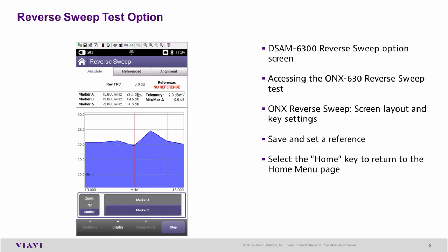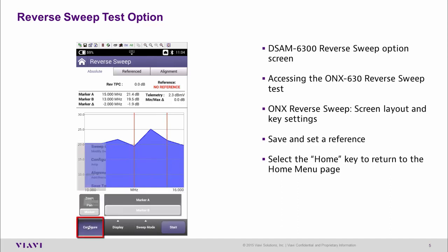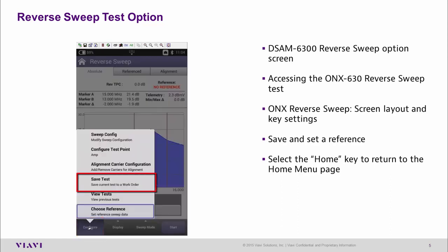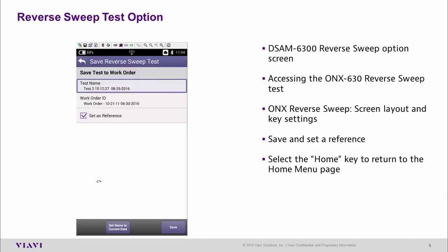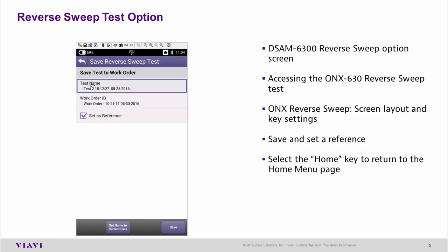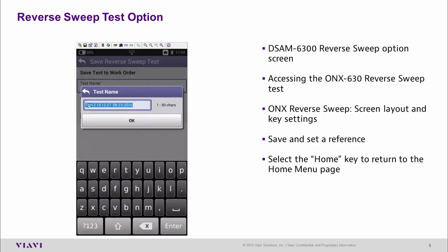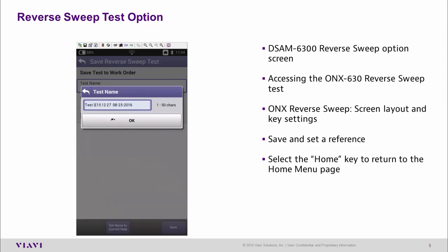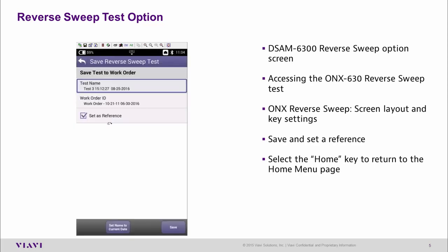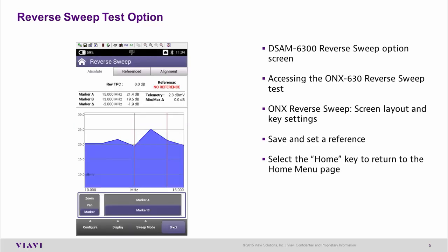The way we do this is pretty straightforward. We stop the test, at which time the configure option becomes available. I would recommend saving the test and setting this particular test as a reference. I'm going to save the test as test 3, and you can see the test will automatically date and time stamp and save it.